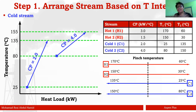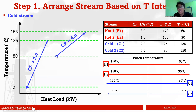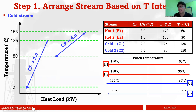Arrange the streams based on temperature interval. My cold streams are C1 and C2. C1 goes from 25°C and needs to be heated up to 135°C, with CP of 2.0. C2 needs to be heated from 80°C to 150°C, with CP of 4.0. At this point I don't care about the slope of the curves — I'm only interested in temperature and CP values.